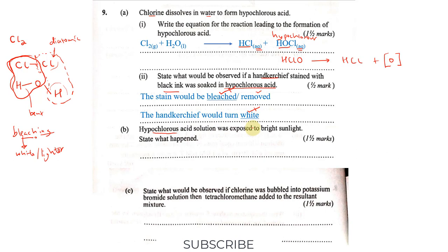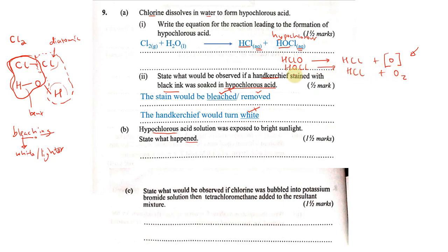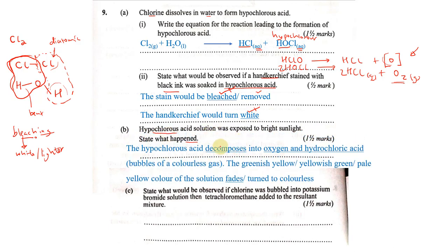Hypochlorous acid solution was exposed to bright sunlight. State what was observed. This hypochlorous acid solution is unstable and tends to follow a decomposition reaction. When we have a number of these molecules, the hypochlorous acid will break down to give hydrochloric acid and oxygen gas. You have to balance it. From that equation, we can tell that the hypochlorous acid decomposes.